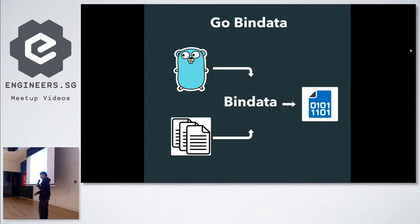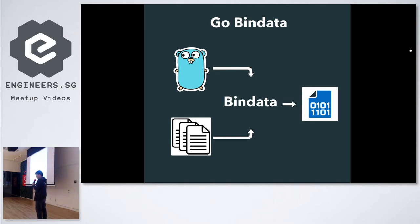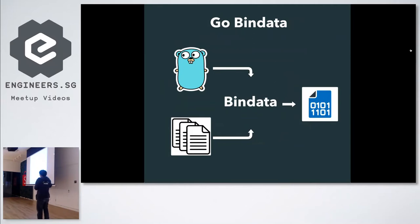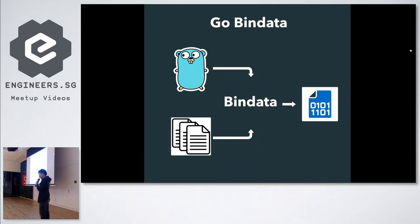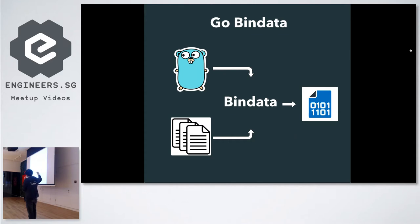In this way, you need to manage the file system on your local, on dev, staging, and also on production — more things to manage for your deployment. What bin data does is include all of the files into your Go source code. So when you build your Go file, everything will be built into one binary.